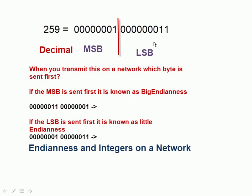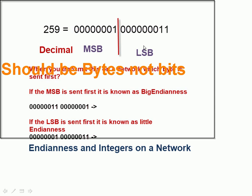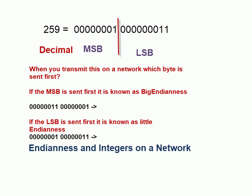When you transmit data on a network you have a choice: transmit the most significant bit first, or the least significant bit first. The same applies when storing data. This is known as endianness, and we have two forms: big and little. If you send or store the most significant bit first it's big endian; if you do the opposite it's little endian. On networks, the standard is big endian — we send the most significant bit first.